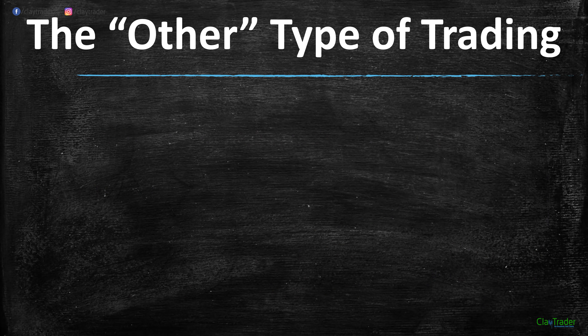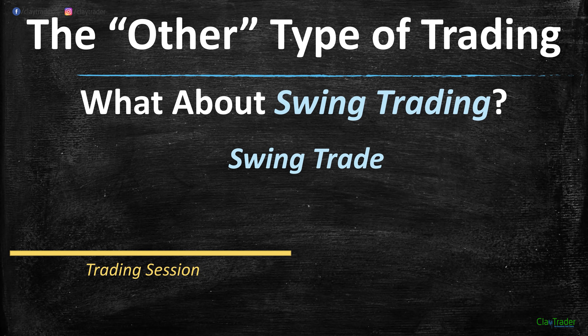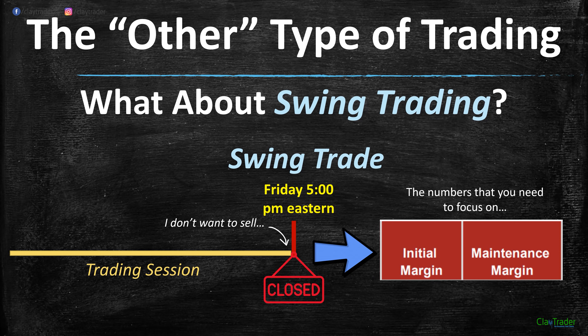But there is that other type of trading out there — swing trading. What exactly is a swing trade? Looking at our timeline: Friday at 5 p.m. is when the markets close. But let's say you don't want to sell for the close. That's possible, but at this point things shift and the numbers you need to focus on are the initial margin and the maintenance margin.